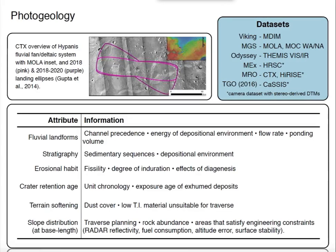One of the first and easiest things to do is photogeology, where you use visible imagery from a variety of instruments on a variety of missions to determine lots of things about the terrain. Specifically with regard to science questions, you can look at fluvial landforms, channel precedents, energy of the depositional environment, flow rate, ponding, stratigraphy, erosional habit, crater retention age, and terrain softening. Thermal inertia can tell you whether the material is soft enough for the rover. Slope distribution depends on the availability of stereo terrain models, which are now widely abundant thanks to HRSC, HiRISE, and other teams. CASSIS on the Trace Gas Orbiter will also provide stereo DTMs.